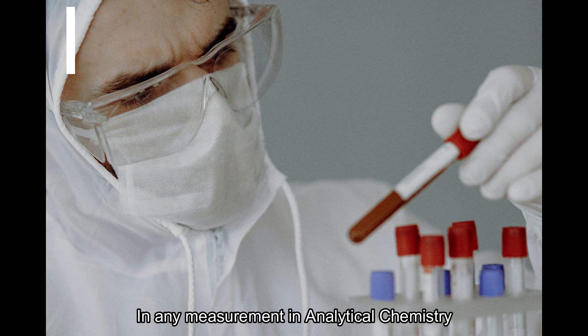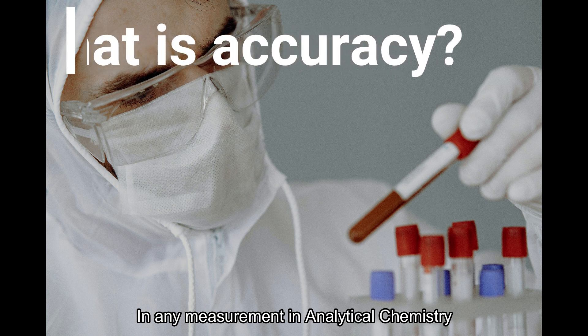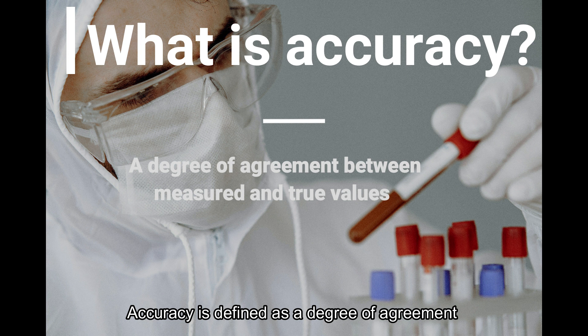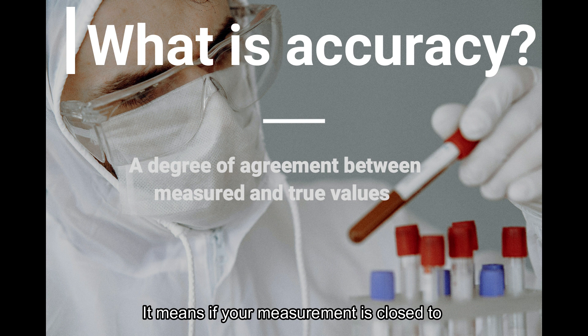In any measurement in analytical chemistry, accuracy is most important. Accuracy is defined as a degree of agreement between measured values and true values. If your measurement is close to true values, then it's called high accuracy.